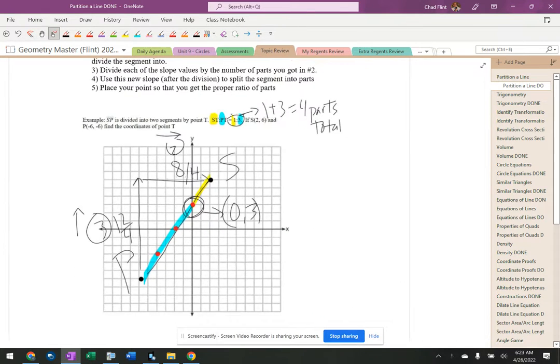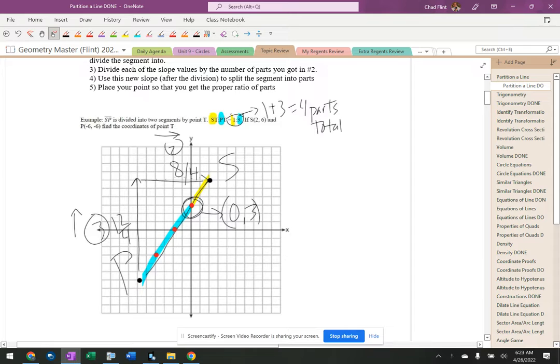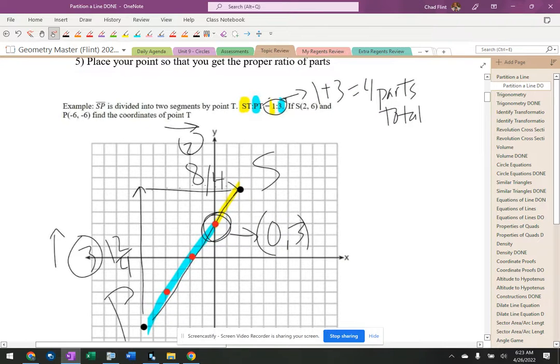So these are all old Regents questions, you can see exactly what they asked. A quick little example here that I already have all worked out is SP is divided into two segments by point T, ST to PT